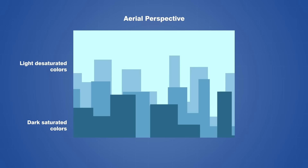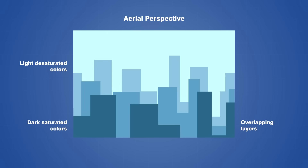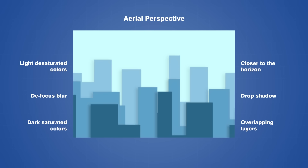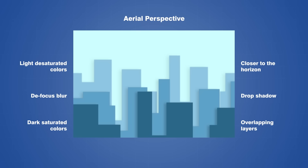Stacking the layers on top of each other helps to further the effect because our brain uses overlapping to perceive relative depth, and placing certain layers higher up makes them seem farther away because we perceive them as being closer to the horizon. We could also choose to add a bit of defocus blur to give the buildings a slight hazy appearance, and adding some shadows helps to enhance the 3D perspective. It's important that shadows in the foreground are darker and more defined, while shadows in the middle and background should be lighter and softer due to less contrast.